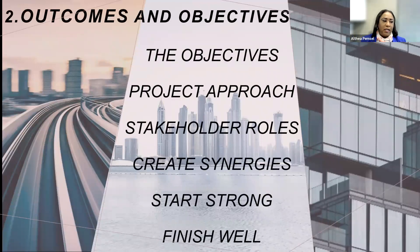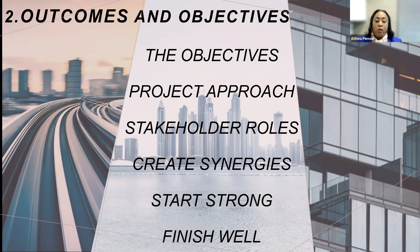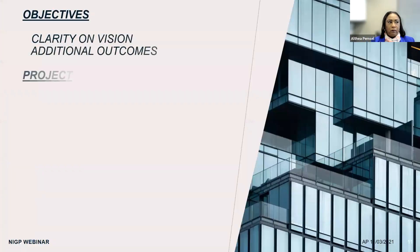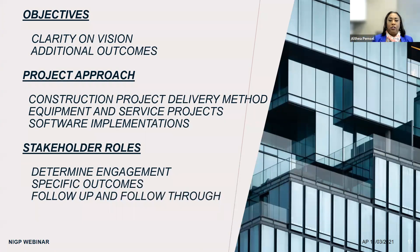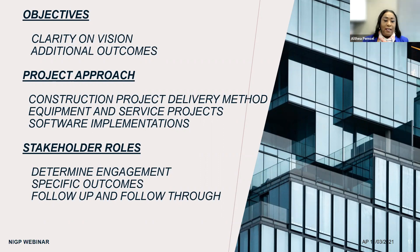We're going to talk about outcomes and objectives, project approach, stakeholder roles, how to create synergies, and to start strong and finish strong. All of the aspects are key to successful projects. The first objective — we need to be clear on what we're doing and what we're trying to accomplish. Is there additional outcomes we can obtain as a result of this? When looking at your project approach, the department generally has one thought, procurement has another, and management yet another. That's why there must be clarity in order to determine which project approach works best.